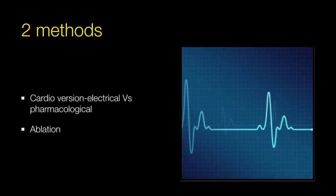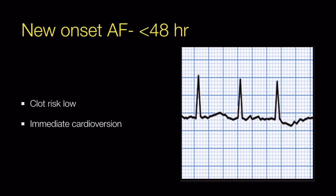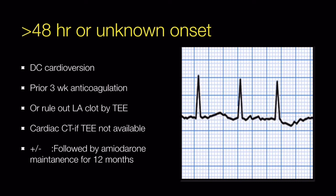The first-line treatment for cardioversion is synchronized DC cardioversion, starting at 200 joules and increasing up to 360 joules. For new-onset AF (less than 48 hours), clotting risk is very low, and we can immediately cardiovert without prior anticoagulation. If AF has lasted more than 48 hours or has unknown onset, we must anticoagulate for at least three weeks before DC cardioversion, or rule out left atrial clot by transesophageal echocardiography (or cardiac CT if TEE is unavailable). After excluding LA clot, we can proceed with DC cardioversion.